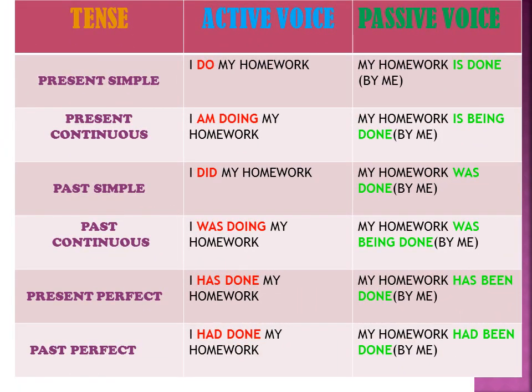Now let's see the difference between tenses in active and passive voice. Present simple: 'I do my homework' → 'My homework is done by me' — 'by me' is optional. Present continuous: 'I'm doing my homework' → 'My homework is being done.' Past simple: 'I did my homework' → 'My homework was done.' Past continuous: 'I was doing my homework' → 'My homework was being done.'